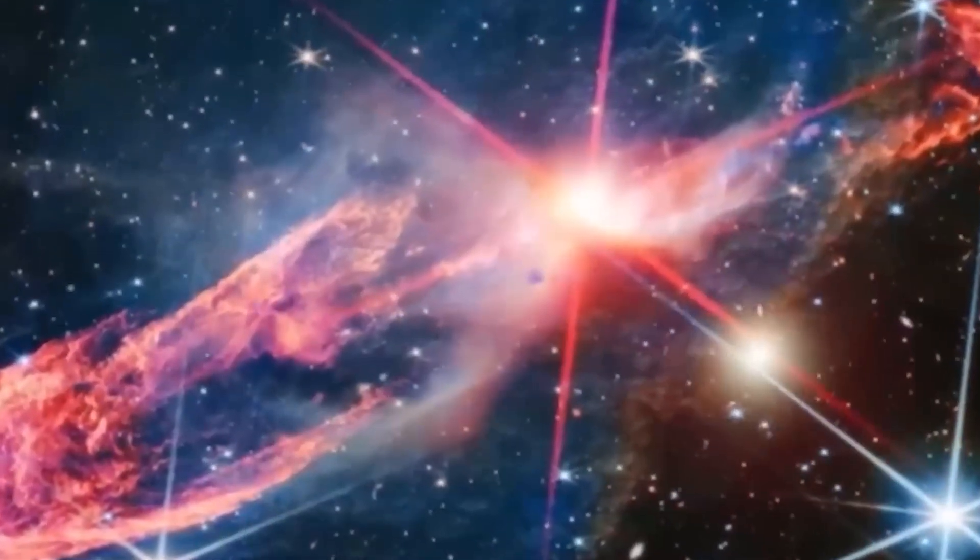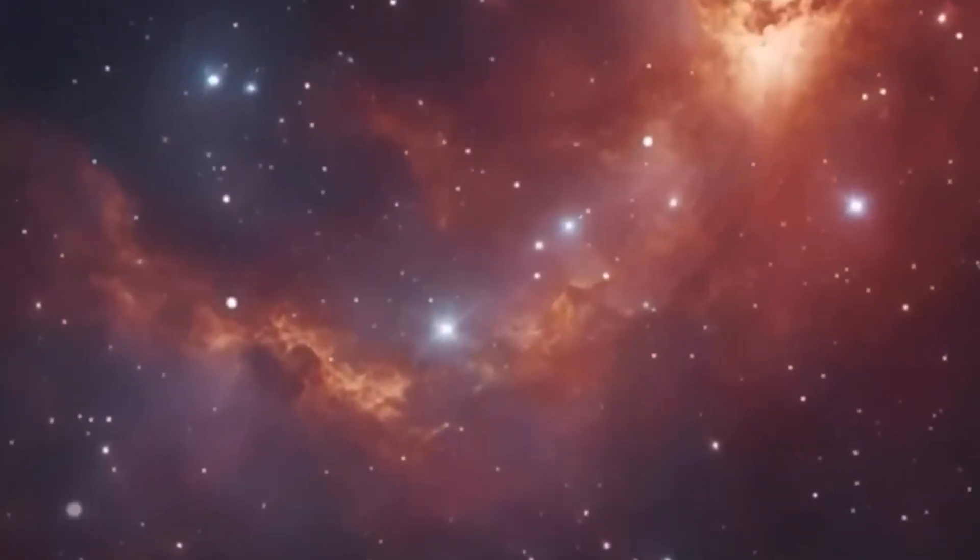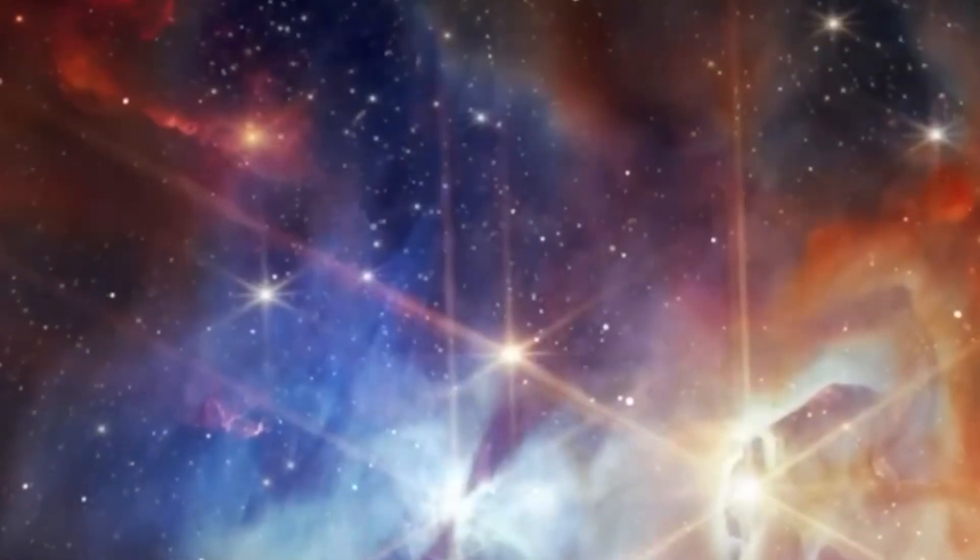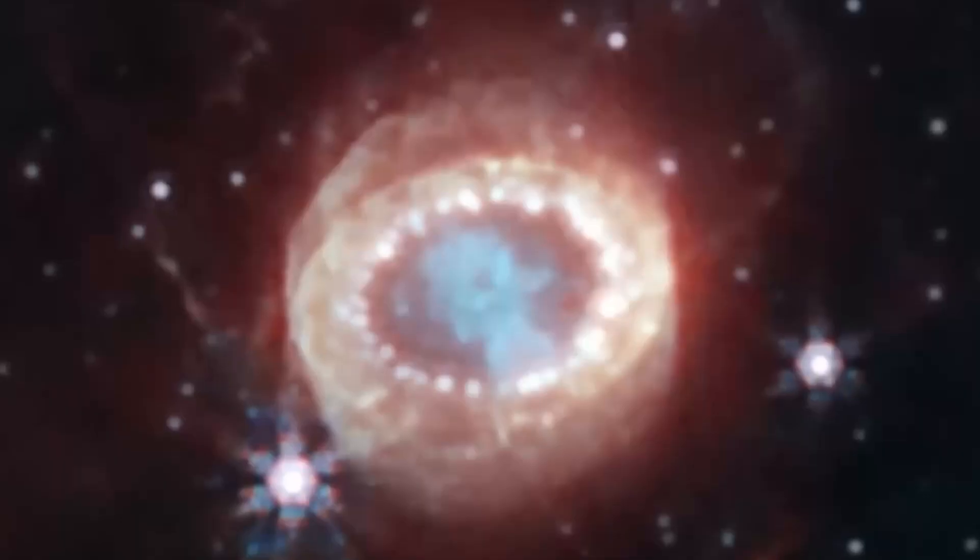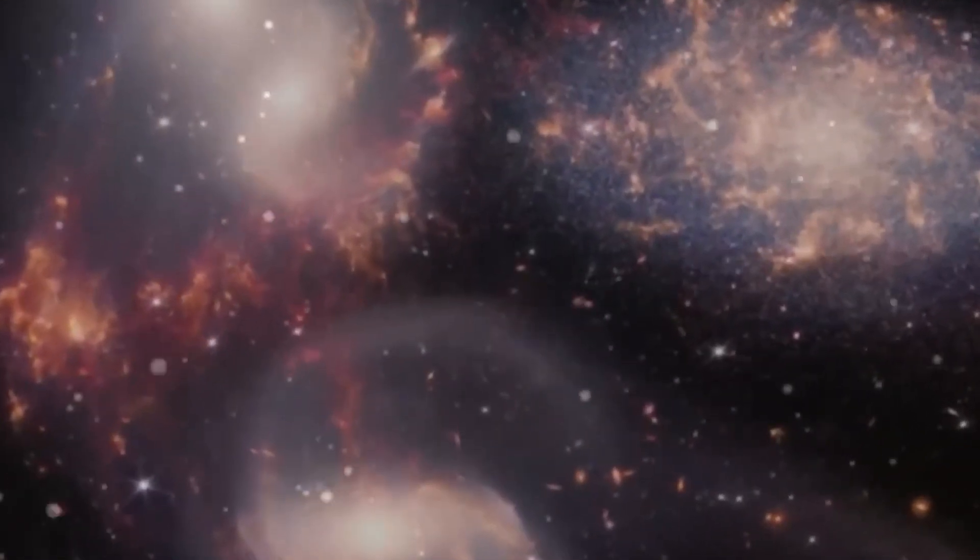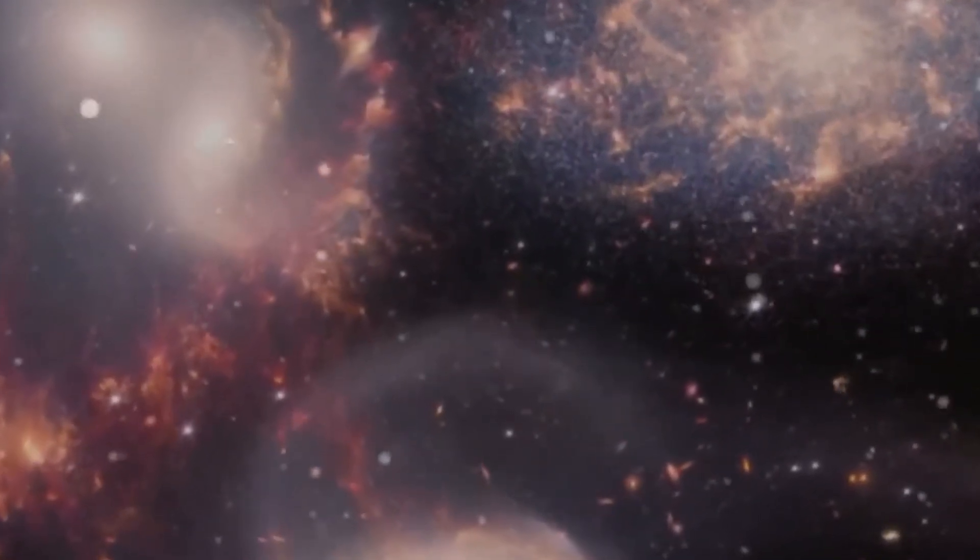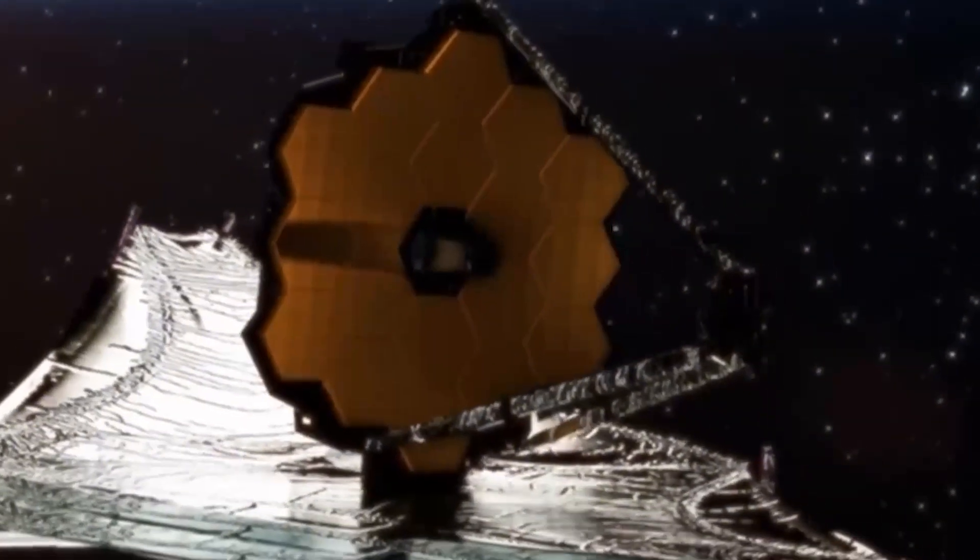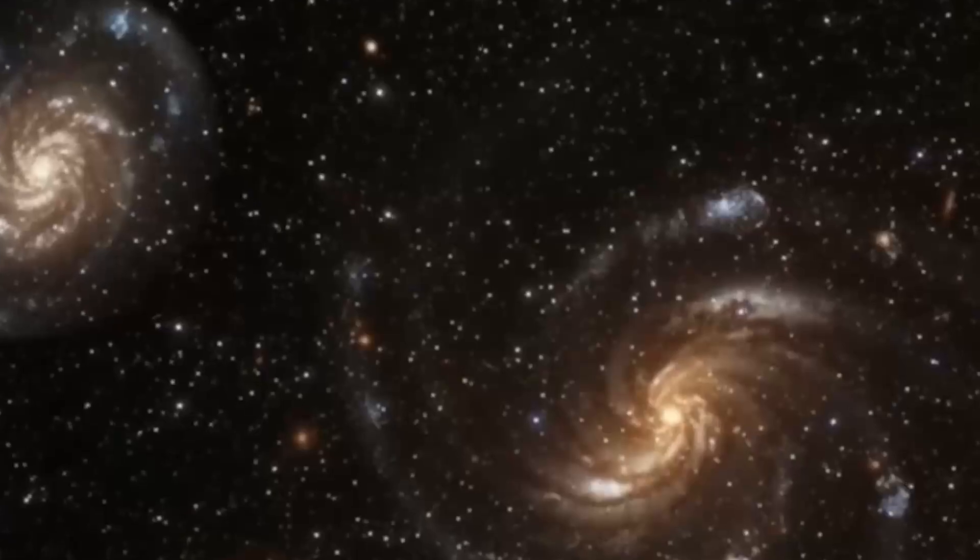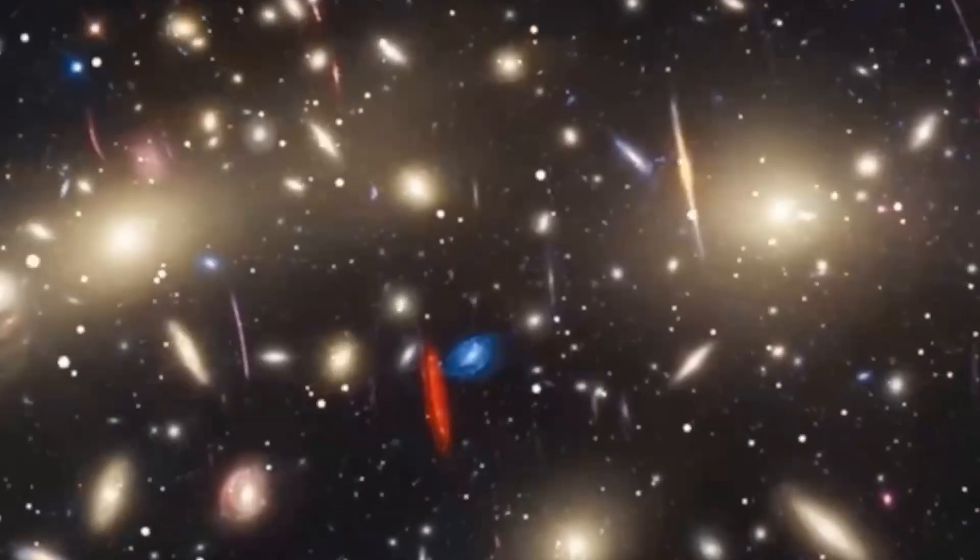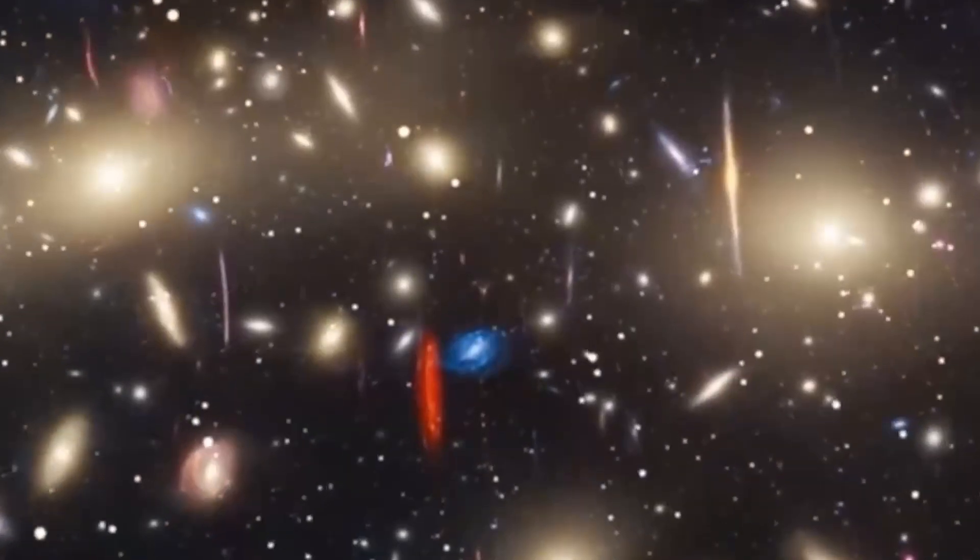These weren't just ancient galaxies. They were impossibly bright, impossibly massive, and impossibly early, appearing hundreds of millions of years before the universe was supposed to be capable of making them. To understand how shocking that is, imagine searching for the baby pictures of your child and instead finding a full-grown adult staring back at you. That's what scientists are now facing.